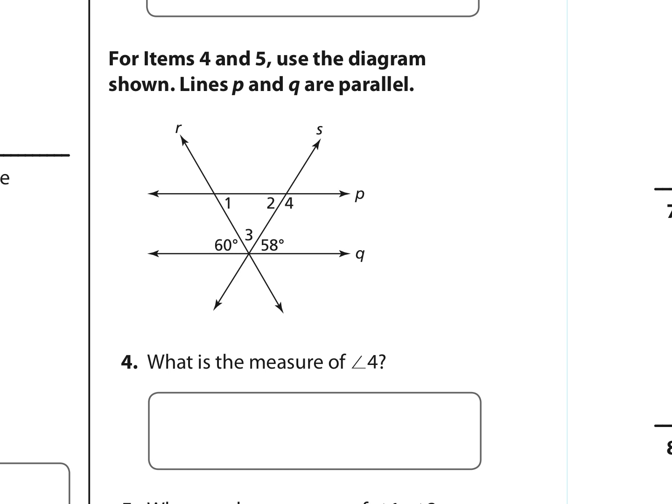Numbers 4 and 5 are using this diagram. Notice lines p and q are parallel. And what is the measure of angle 4? So we want to know this angle measure. We are given a 60 degree angle and a 58 degree angle. We know a few things. One thing that we could know is that that angle, that 58 degrees and angle 4, these are called consecutive interior angles. They're formed by being on the same side of a transversal line, and they are supplementary. So the measure of angle 4 plus 58 is equal to 180 degrees. So I want to know the measure of angle 4. So I'm going to subtract 58 from both sides. And I find that the measure of angle 4 is 122 degrees.